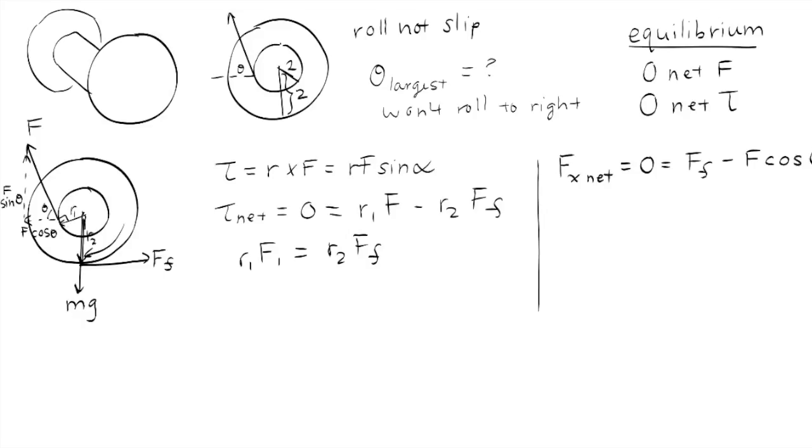And these two have to cancel each other out because our object is neither moving to the right nor left. So we find that the friction force is equal to F times cosine of theta.